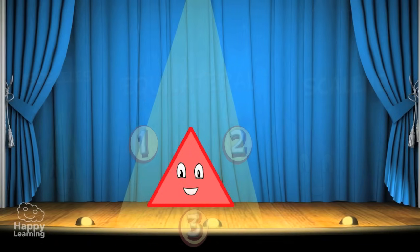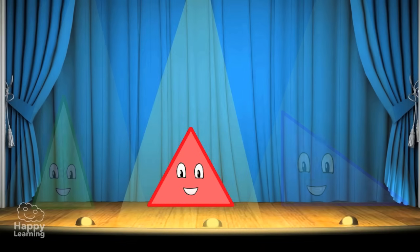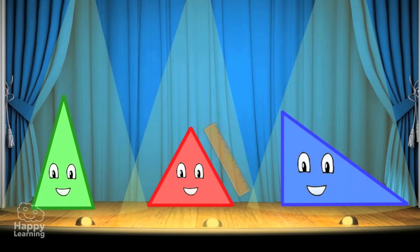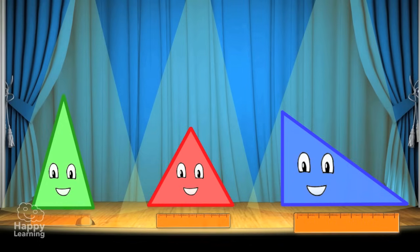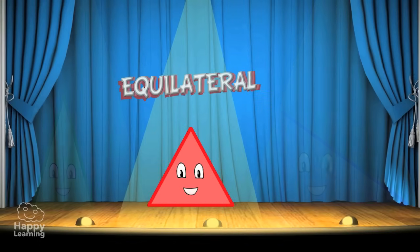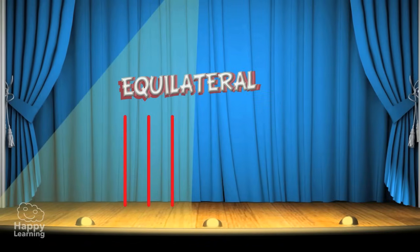All triangles have three sides and depending on the length of their sides they can be classified like this. An equilateral triangle: all three sides are equal in length.